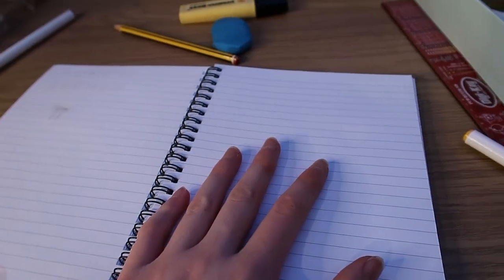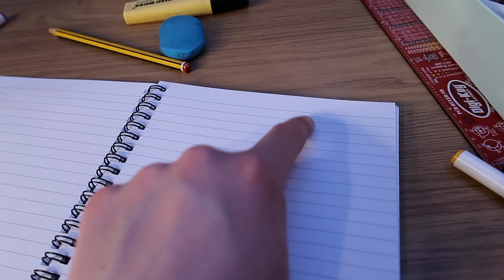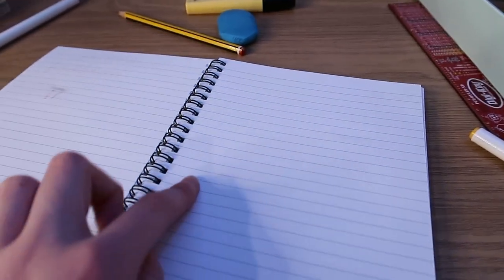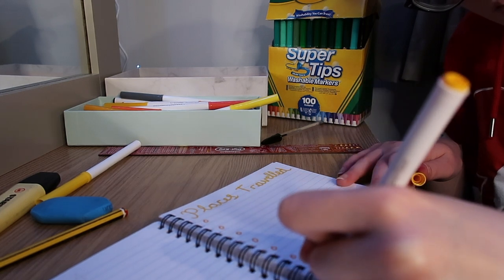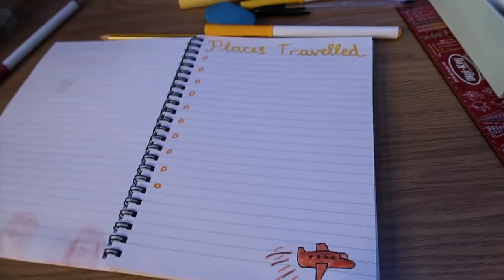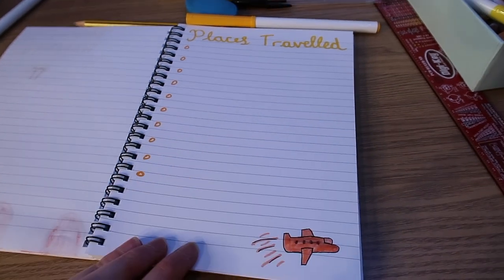The next page is going to be another simple one. It's going to be places traveled. All I'm going to do on this one is write the title, maybe a little doodle of an airplane, and then just write some bullet points. Okay, this is how the page turned out. It's very simple but I still love it.